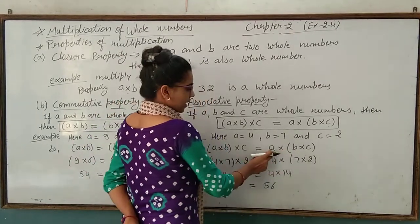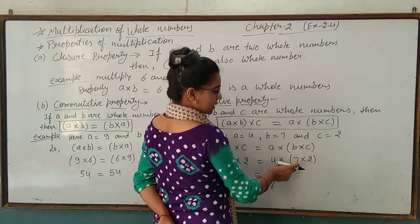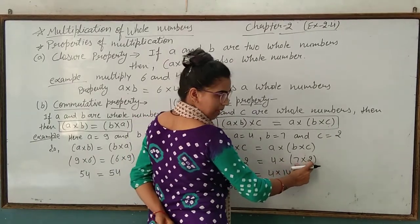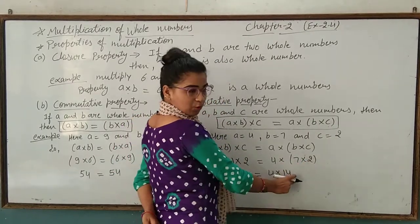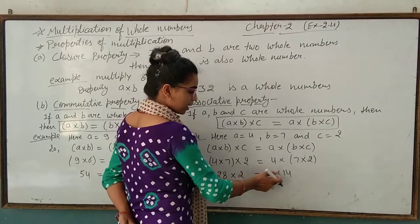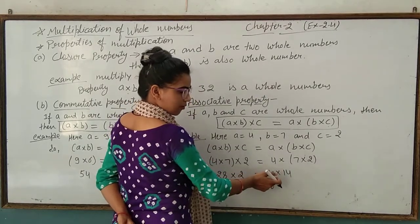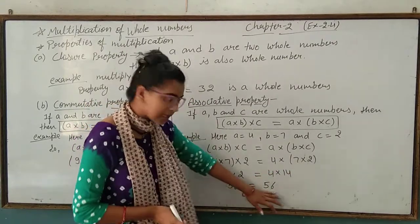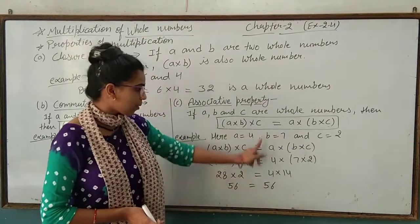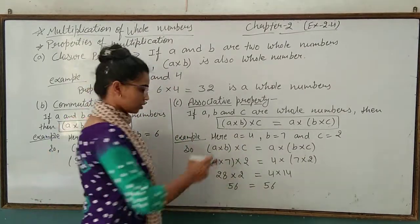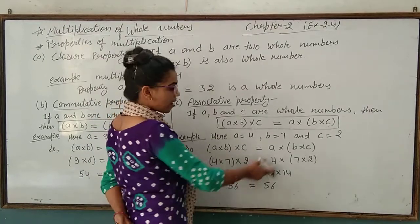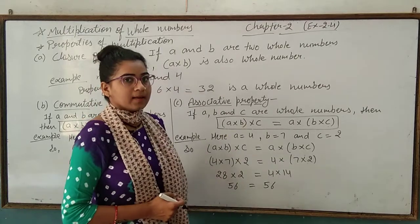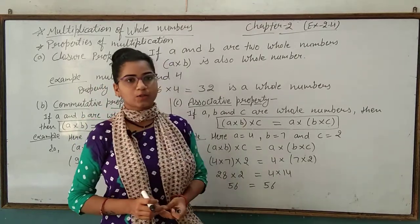Now we take the right side. A is 4, multiplied by b is 7, multiplied by c is 2. First we multiply 7 multiplied by 2, which equals 14. Then we multiply 4 by 14, which equals 56. Both sides are equal to 56, so our property is verified. I hope you all have understood this property.